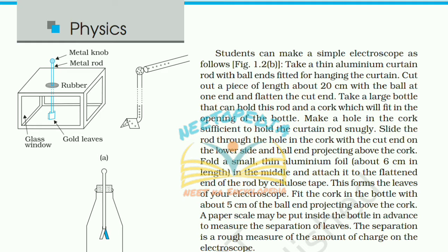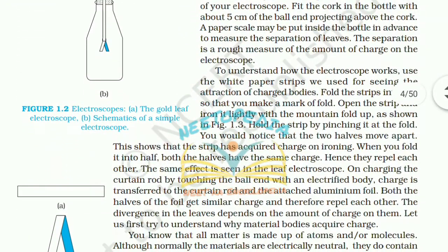Students can make a simple electroscope as follows: take a thin aluminum curtain rod with ball ends, cut out a piece of about 20 centimeters with a ball at one end and flatten the cut end. Take a large bottle that can hold the rod and a cork which fits the opening. Make a hole in the cork to hold the curtain rod, slide the rod through with the cut end on the lower side and the ball end projecting above. Fold a small thin aluminum foil in the middle and attach it to the flattened end with cellulose tape — this forms the leaf of the electroscope. A paper scale may be put inside the bottle to measure the separation of the leaves.